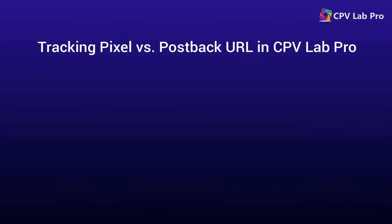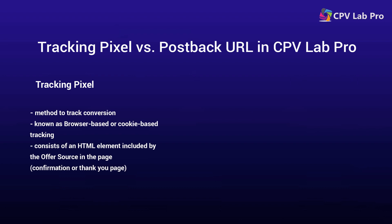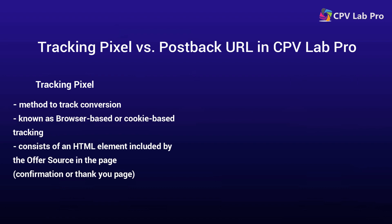So what is the difference between the tracking pixel and the postback URL? The main difference comes from the way they are integrated by the offer source. The tracking pixel, also known as browser-based tracking or cookie-based tracking, consists of an HTML element that the offer source will include in the page. It means that the tracking pixel is executed in the context of the visitor and gets included in the page that the visitor sees after purchasing the offer. This is the confirmation or thank you page.